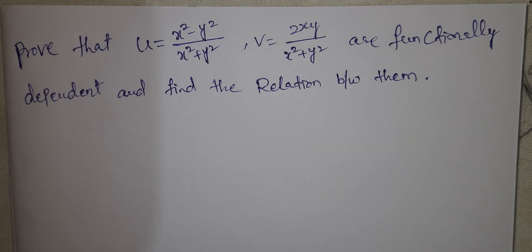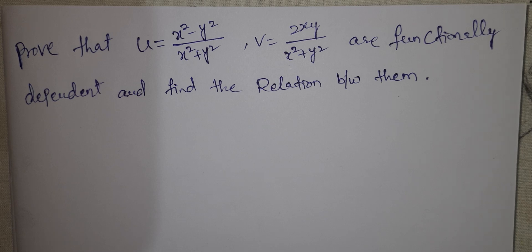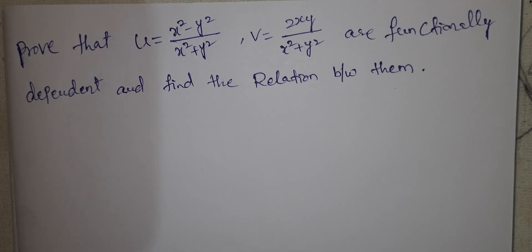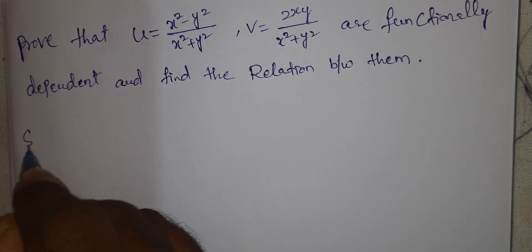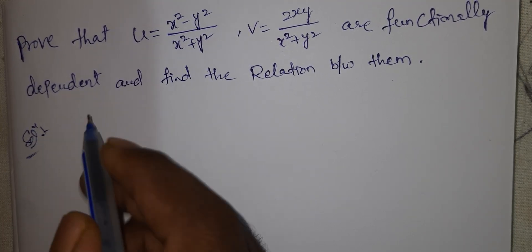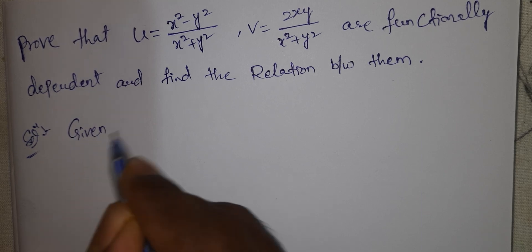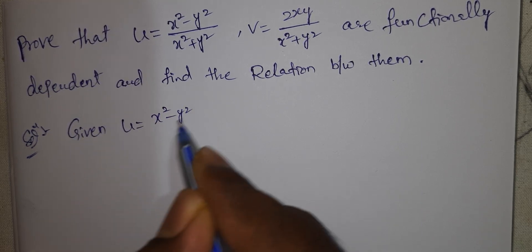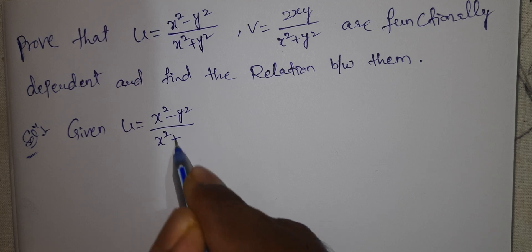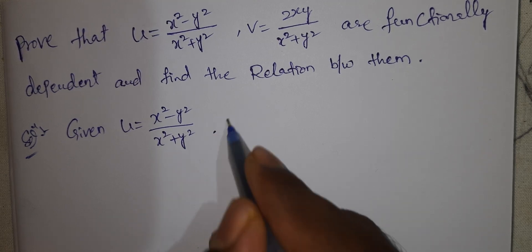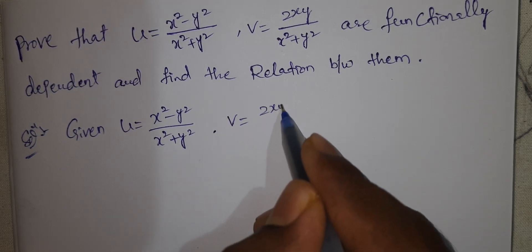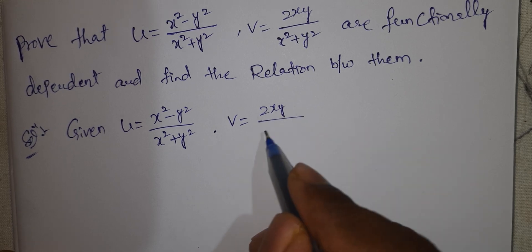This is a partial differential equation problem. Given: independent variables are two, dependent variables are two, so we have a 2×2 determinant.